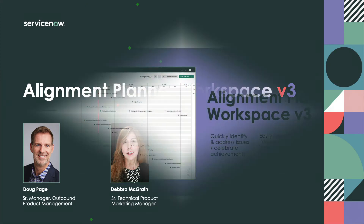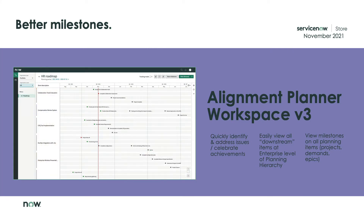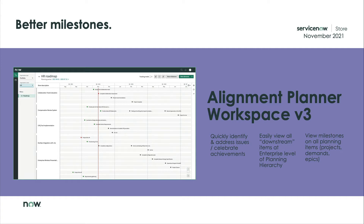That's right. Milestones are now available and visible on all planning items — projects, demands, epics. In the past, an unidentified, seemingly minor issue could have mushroomed into a much larger problem. But with Alignment Planner Workspace Version 3, senior stakeholders who might not be involved in the project on a daily basis, but who do pay attention to important project milestones, now have immediate insight.